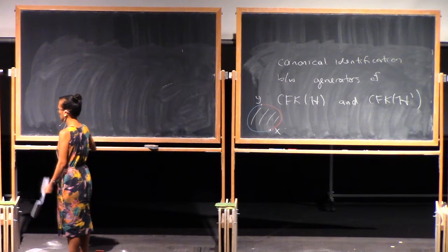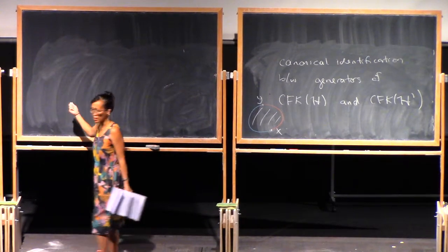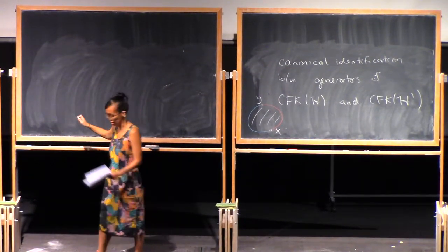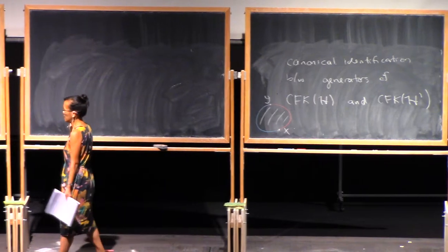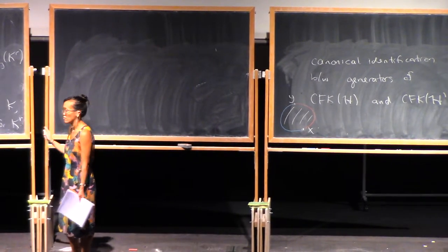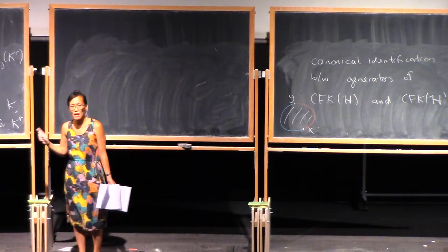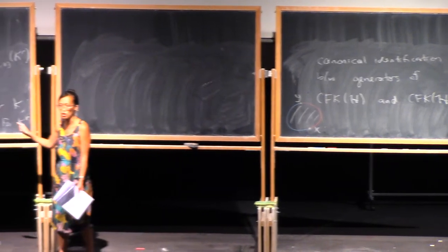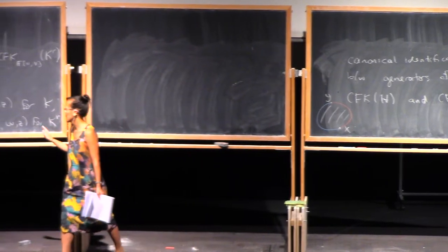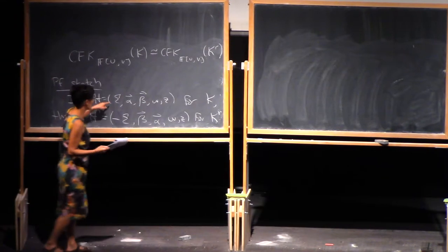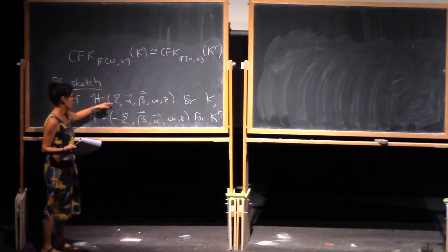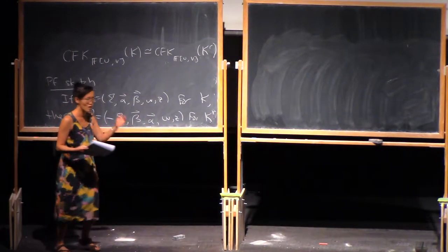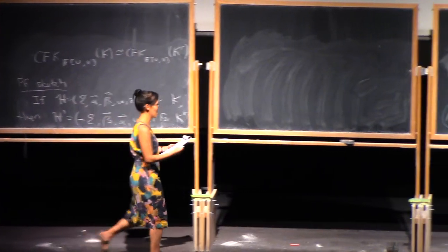Just as in the case of mirroring, there's a canonical identification between the generators. In fact, that identification doesn't just identify the generators — it actually also identifies the differential. Because we reversed the orientation of sigma, but we also switched the alphas and betas.